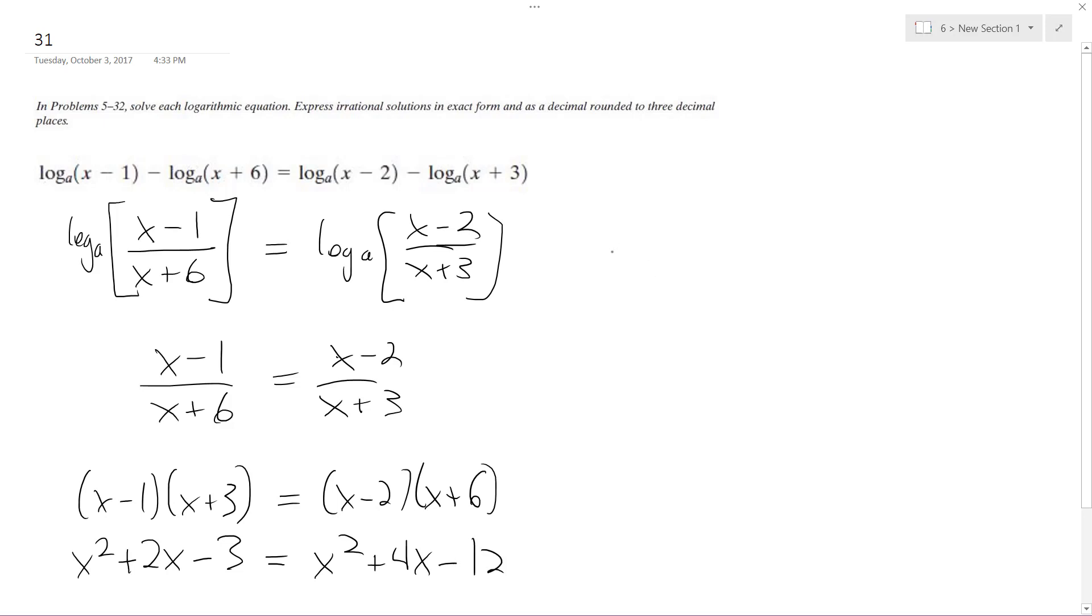Alright, combine them. x squareds cancel out. We get 2x is equal to 9.